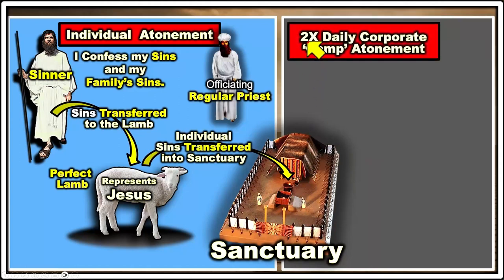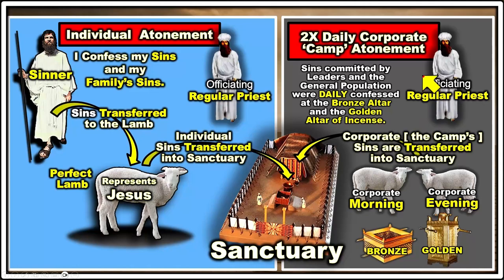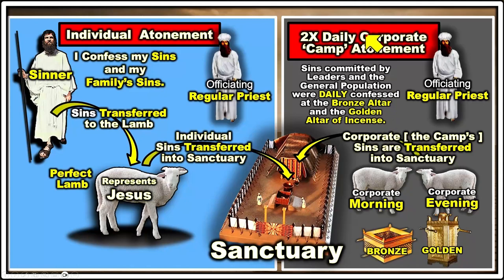The other service conducted daily is called the daily service or corporate camp atonement. This happens twice a day, officiated by a regular priest. Sins committed by the leaders or the general population were daily confessed at the bronze altar, and the blood was also sprinkled on the golden altar of incense. So the corporate sins were transferred from the encampment into the sanctuary — on the bronze altar and inside on the golden altar. Both altars were associated with the corporate or camp atonement.